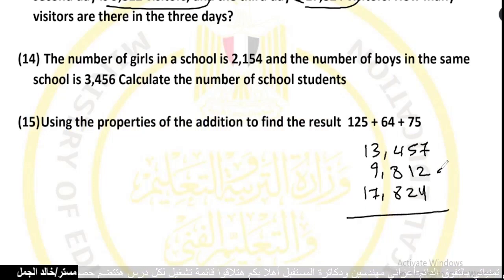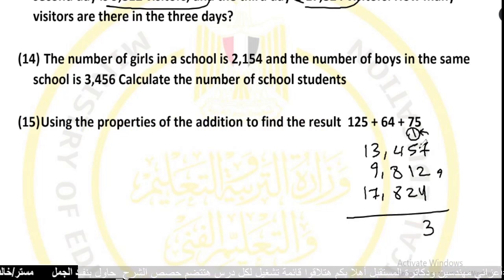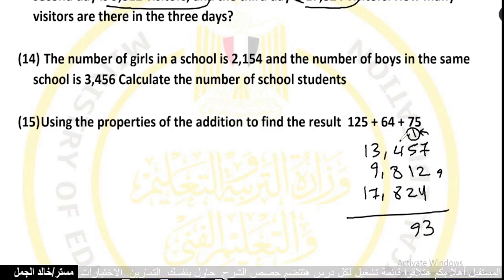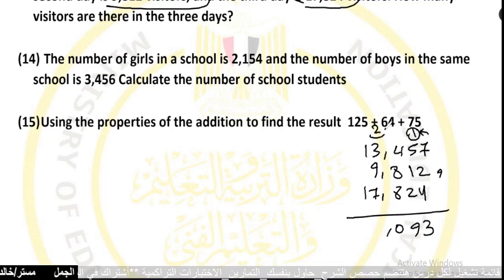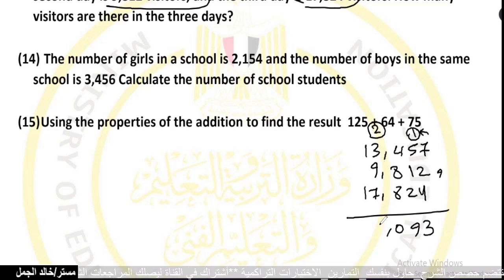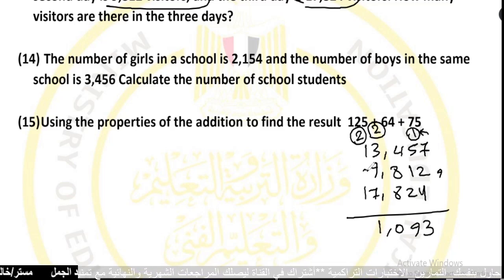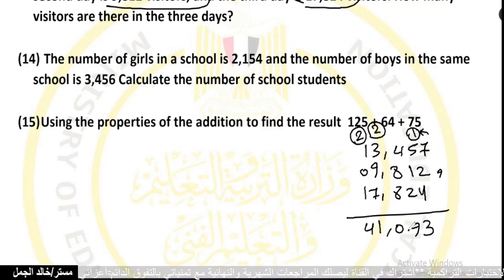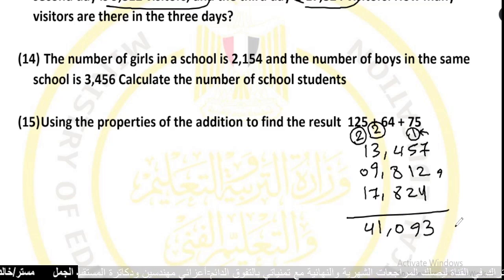Adding the three numbers: 7 plus 2 plus 4 equals 13, write 3 carry 1. 1 plus 5 plus 1 plus 2 equals 9. 4 plus 8 plus 8 equals 20, write 0 carry 2. 3 plus 2 plus 1 plus 7 equals 13, write 3 carry 1. 1 plus 1 plus 0 equals... The total number of visitors over the three days is 41,093.